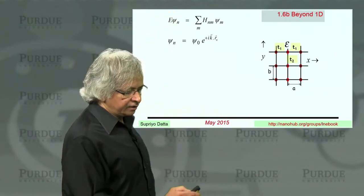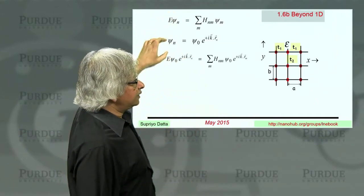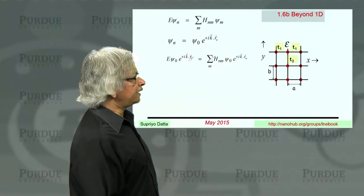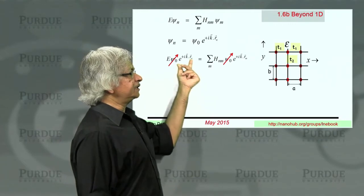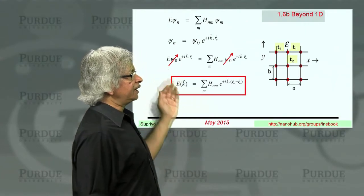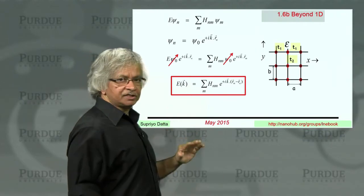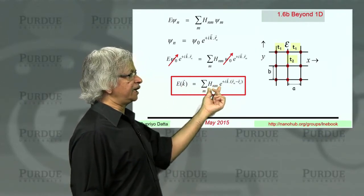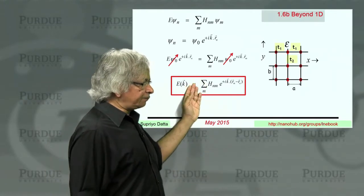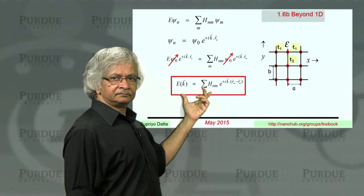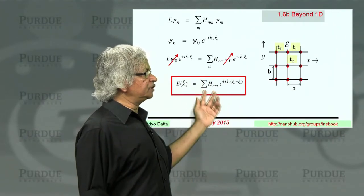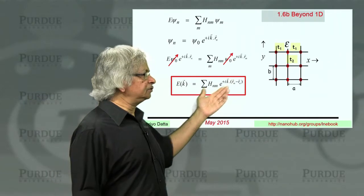Now, if you take this and substitute it in here, you'll get instead of psi n, we put in the psi 0, e to the power i k dot r n, and here also you put in the psi 0. And like before, the psi 0's cancel out, and you could take this exponential from here and put it on this side with a minus sign, and therefore, you then have the expression for the energy in terms of k. So just like before, e k is now equal to h nm e to the power i k dot r n minus r n. So what we'll do next is apply this to this problem. This is a general relation. Actually, it would work 2D, 3D, doesn't matter.